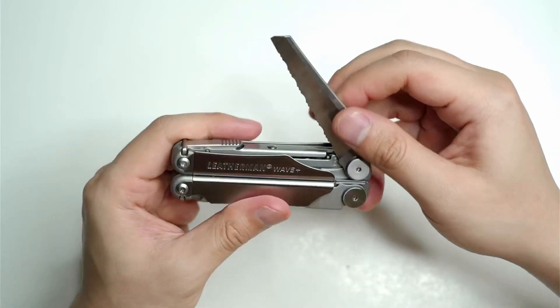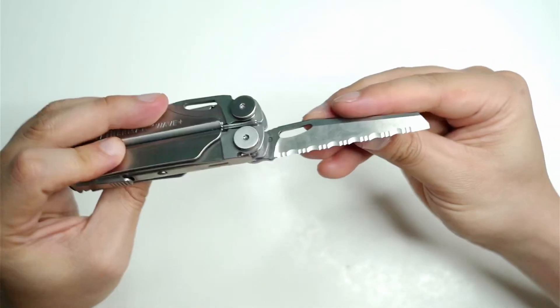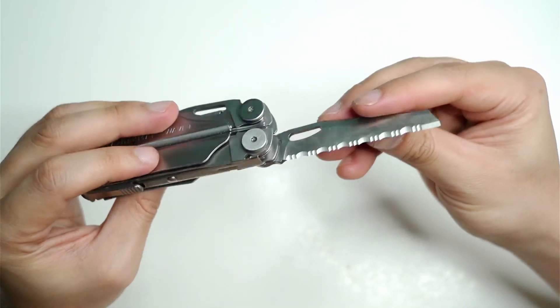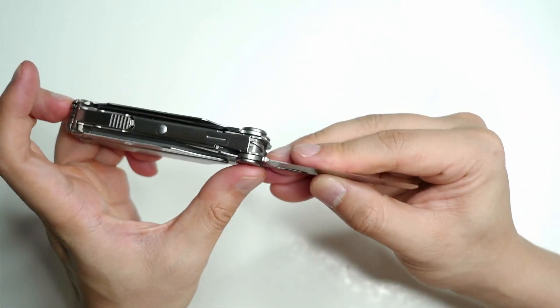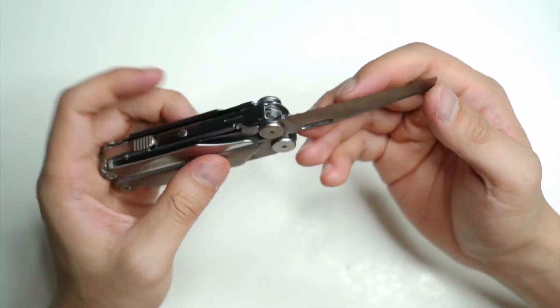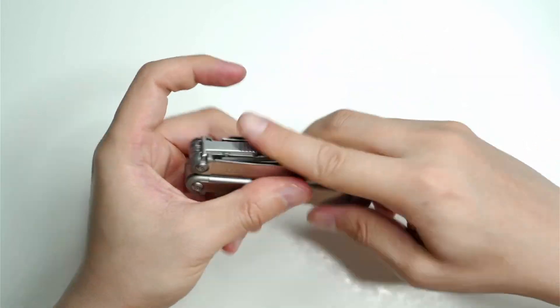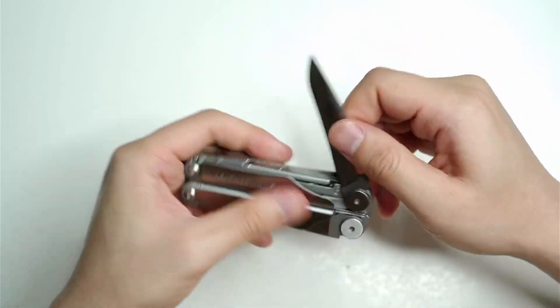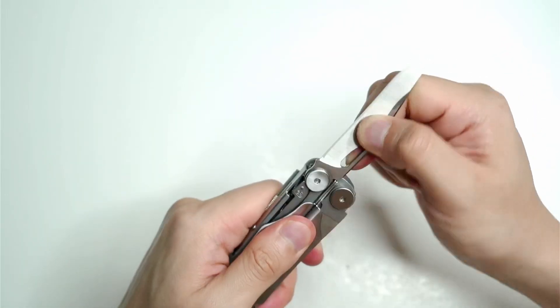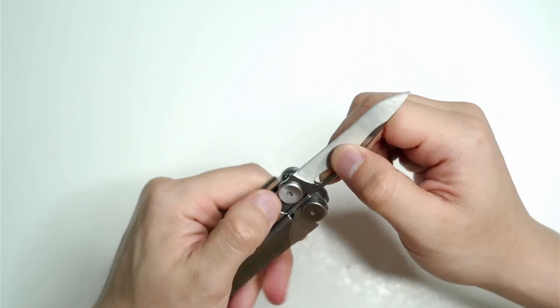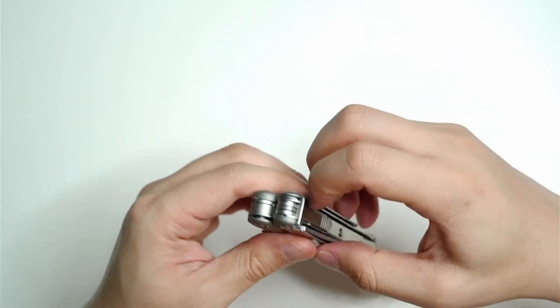So you've got this 420HC serrated knife, and this is it from the other side. The entire tool is 241 grams, closed 10 centimeters, and the blade, I believe it's about 7.37 centimeters for the primary blade. This is the serrated blade, but you do have the primary 420HC blade here. Very sturdy feeling.